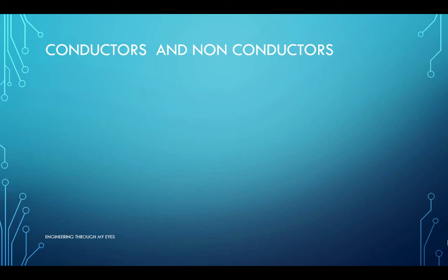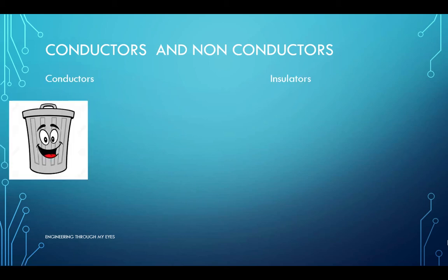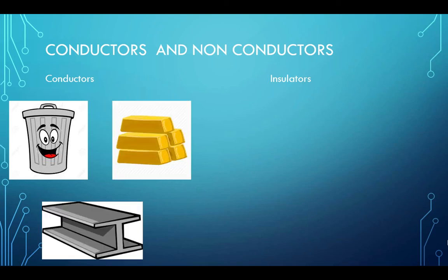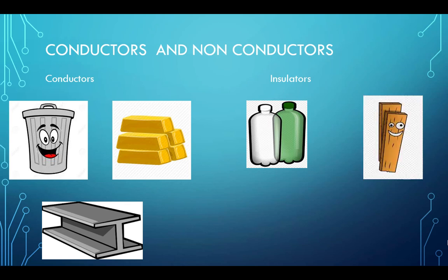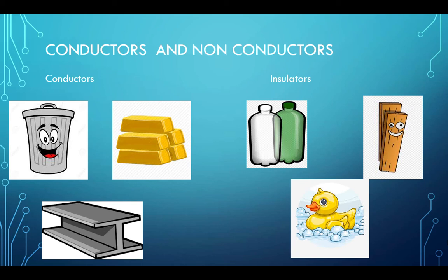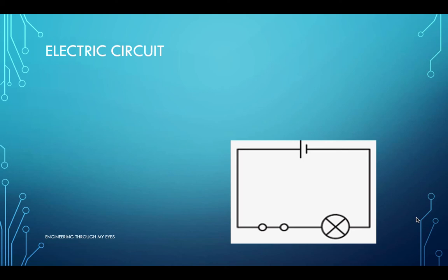electricity can start from a particular path and then reach its destination, and this path is known as conductor. And then there is a medium or a path that does not allow the flow of electricity. That medium is known as insulator or a non-conductor. There are different types of examples of conductors and non-conductors around us. Some of the conductors can be steel, gold, and aluminum, while some insulators are plastic, rubber, and wood. Do you know of any other examples of conductors and insulators?